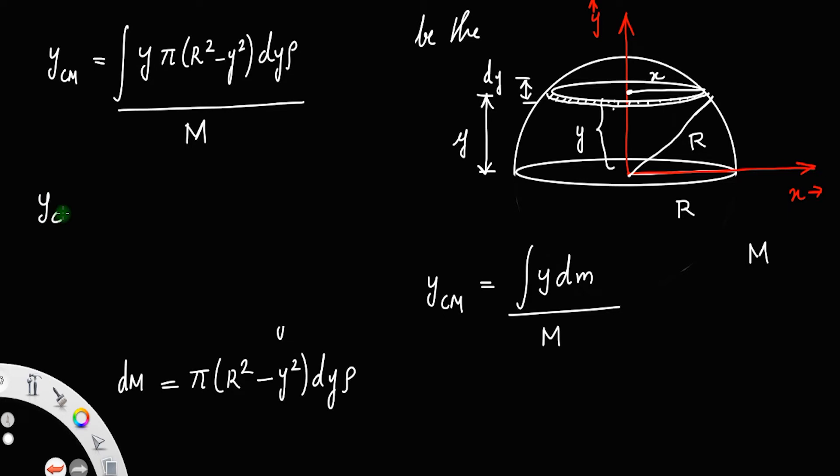This can be solved as y_cm equals taking one by M out, integral rho into pi times y into r squared minus y cubed dy. The y is from 0 to the maximum distance r, so put the limit 0 to r.